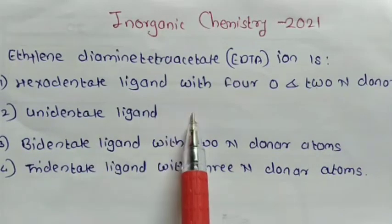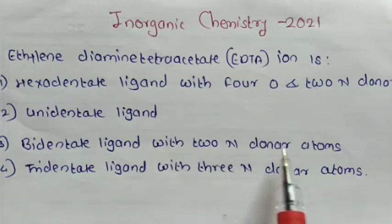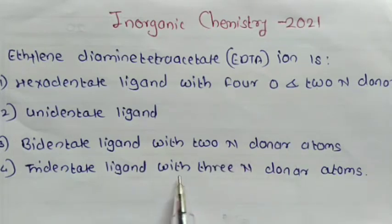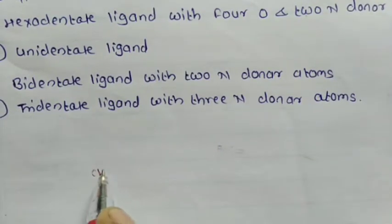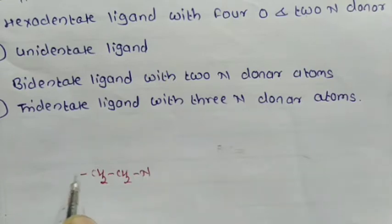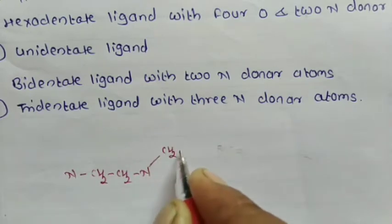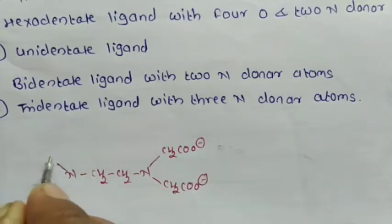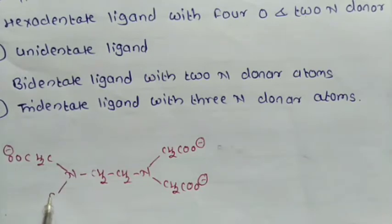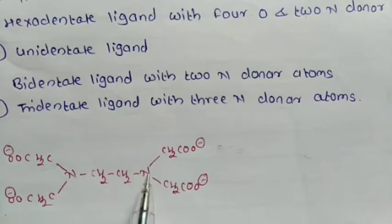(2) unidentate ligand; (3) bidentate ligand with 2 nitrogen donor atoms, or tridentate ligand with 3 nitrogen donor atoms. See first the structure of this ethylenediamine tetraacetate ion. The ethylenediamine CH₂CH₂ unit is attached to 4 tetraacetate groups: first CH₂COO⁻, second CH₂COO⁻, third CH₂COO⁻, and fourth CH₂COO⁻. This is the ethylenediamine tetraacetate ion, called the EDTA ion.